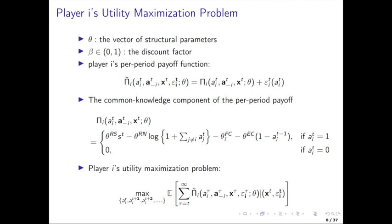Let's talk about player i's utility maximization problem. We've established what the actions and states are and what the state transition is. We have theta — a vector of structural parameters — and we're going to separate out beta as a discount factor, assumed to be the same for all the different players. Player i's per period payoff function has additive separability in errors: state and decision specific payoffs that depend on the actions and the common knowledge states, and then idiosyncratic shocks to investments for firm i. It can be IID extreme value or other distributions, but it's additive.